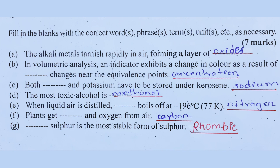Number B: In volumetric analysis, an indicator exhibits a change in color as a result of changes near the equivalent point. Volumetric analysis uses the concentration of the solution.